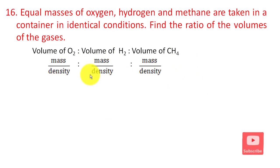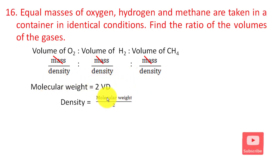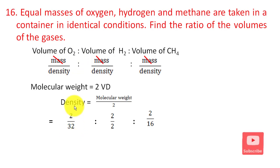Volume is mass divided by density. Since masses are equal, mass cancels out. Density is related to molecular weight by: density equals molecular weight divided by 2 (vapor density relation). So volume is proportional to 1 divided by molecular weight. For O₂, molecular weight is 32, so density is 32/2 = 16. For H₂, molecular weight is 2, so density is 2/2 = 1. For CH₄, molecular weight is 16, so density is 16/2 = 8.